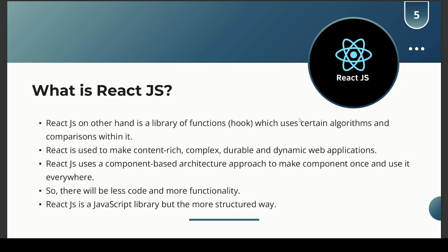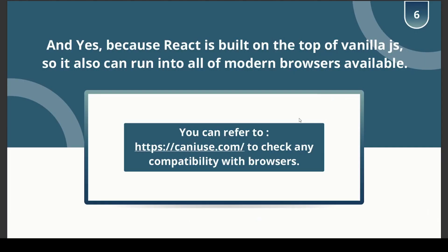React.js uses a component-based architecture — remember this, it is a very important point. It uses a component-based architecture approach to make a component once and use it everywhere inside the project. That is one of the most powerful reasons why we use React.js: there will be less code and more functionality. React.js is JavaScript but in a more structured way, and because React is built on top of vanilla JavaScript, it can also run in all sorts of modern browsers.